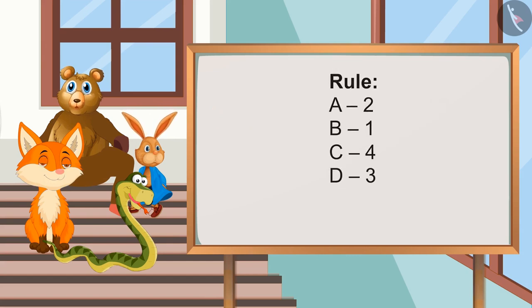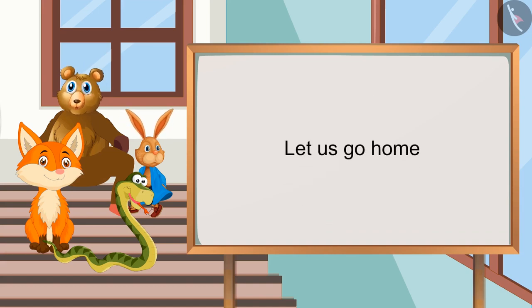If we put alphabets in this order, 2 for A, 1 for B, 4 for C, 3 for D, etc. Then how will we write, let us go home in number code? Let's first finish the code given by you.